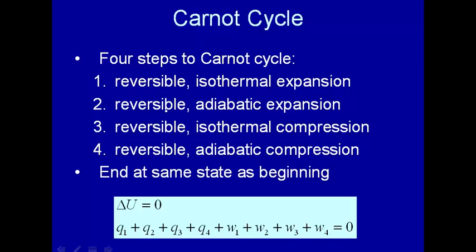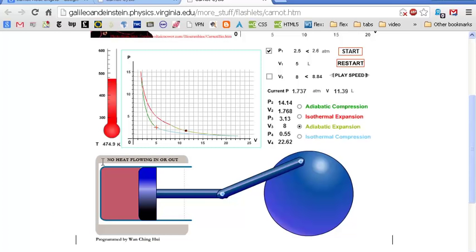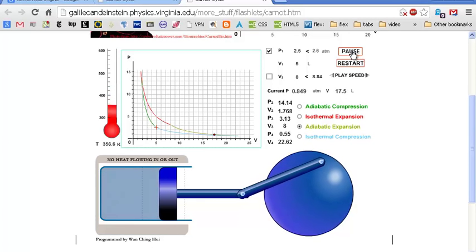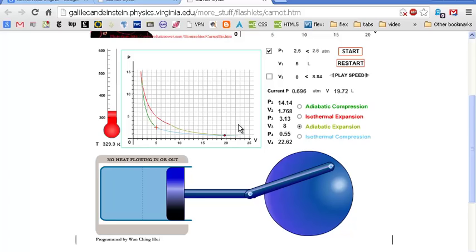Now the second step is a reversible, all these are reversible, a reversible adiabatic expansion. Remember adiabatic expansion means there's no heat transferred into the system. So now we have an insulator here. The gas is still expanding. There it is. And now we've expanded the gas.